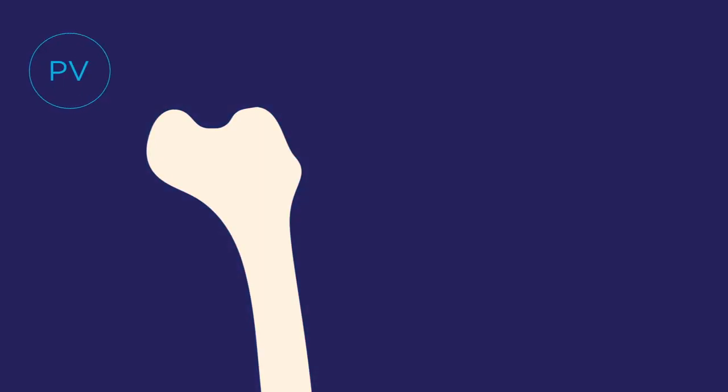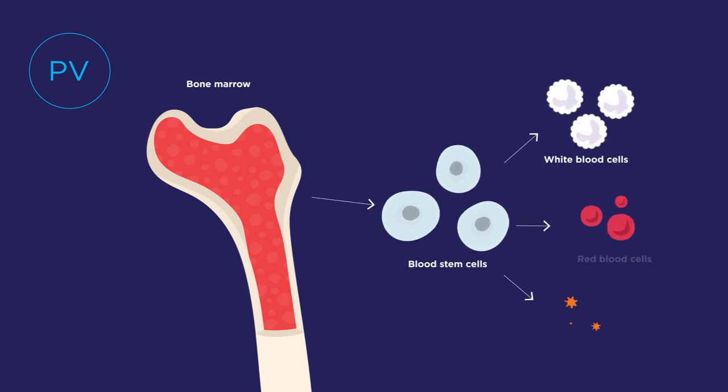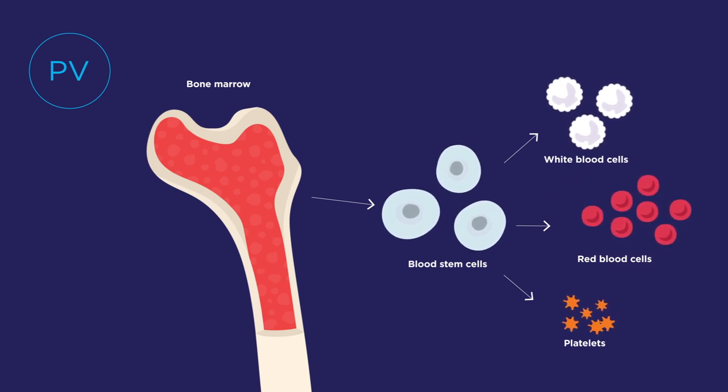Polycythemia vera or PV is a rare chronic blood cancer in which the bone marrow produces too many blood cells, particularly red blood cells. People with PV may also experience troublesome PV-related symptoms.